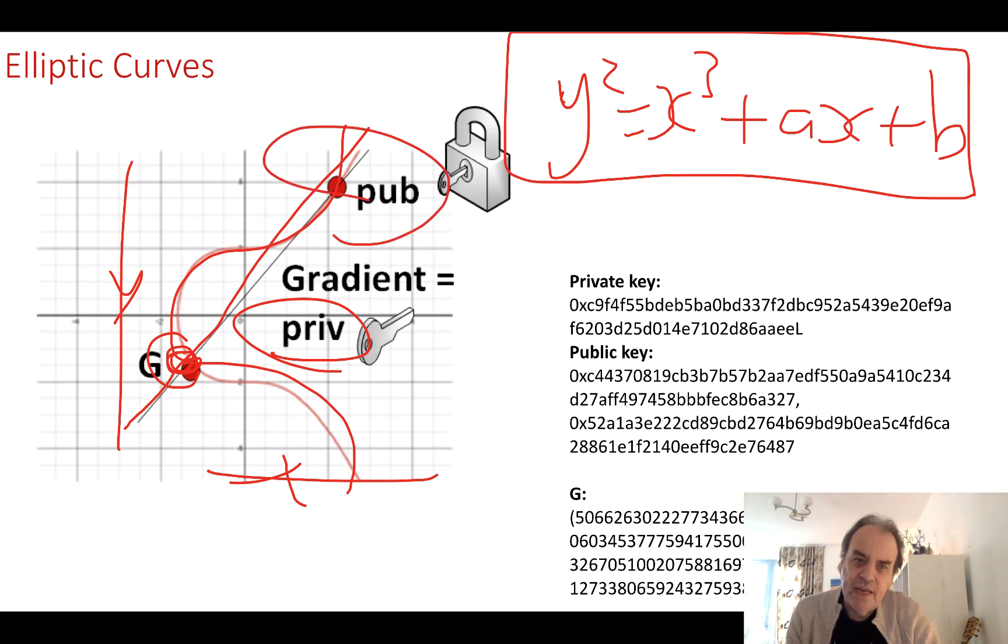This is a typical example. We have a 256 bit private key, which is a random number, then a public key with an x,y point. The G value is a point on the curve that we will use. We have an x value and this is the y value.